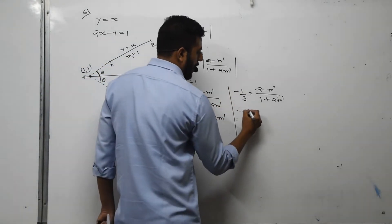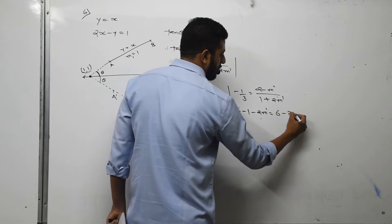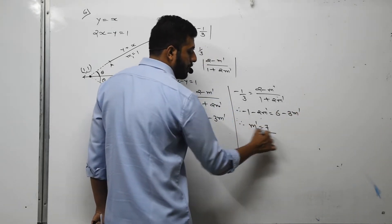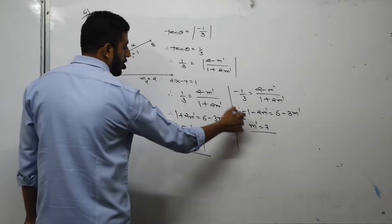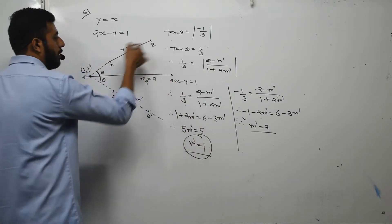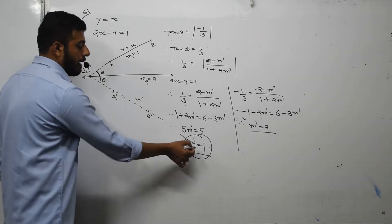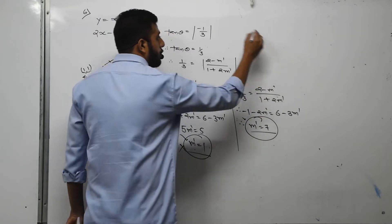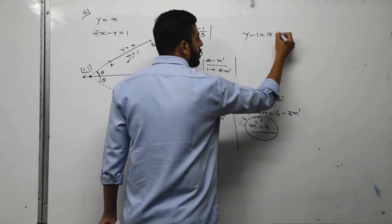For the other case: minus 1 minus 2M prime equals 6 minus 3M prime, giving M prime equals 7. Since M prime equals 1 is already the slope of line AB, we cannot take that. So we must take M prime equals 7, and use the slope-point equation y minus y1 equals M(x minus x1) to find the equation of A prime B prime.